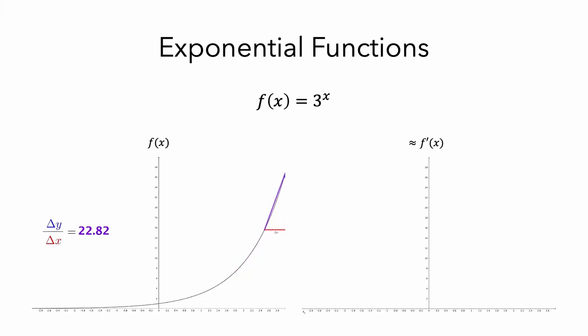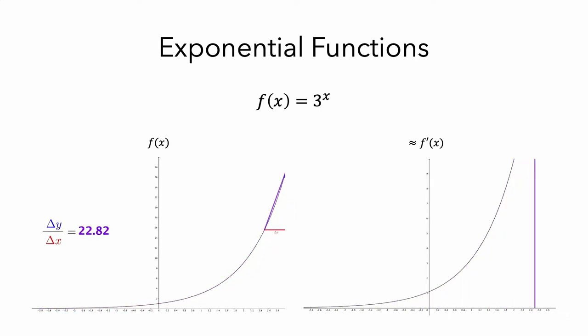What we can observe is that for a fixed delta x, the ratio of delta y to delta x starts off close to zero and then gets larger and larger. Take a few moments to think about what the graph of this ratio would look like. Now let's draw a graph that approximates f prime. What you should notice is that the graph of f prime has the same basic shape as the graph of f.